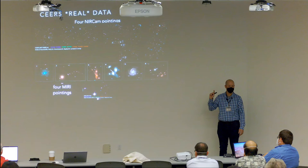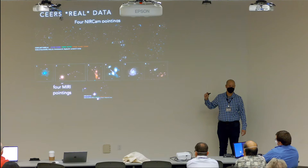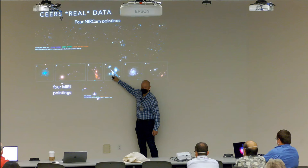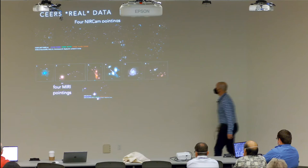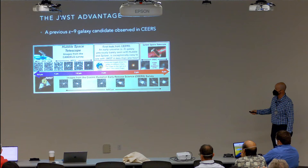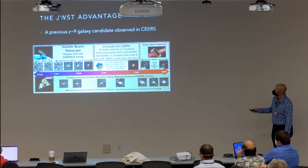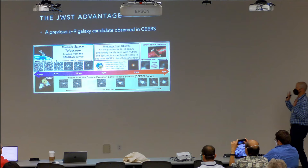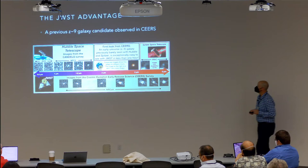Comparing HST to JWST directly: a real redshift-9 galaxy seen with HST WFC3 required a couple of hours of integration and was barely visible in Spitzer IRAC at 50 hours. The same galaxy in CEERS is easily visible in about 40 minutes of integration. The increase in resolution over Hubble is amazing. This is a pretty dramatic demonstration of JWST's capability.